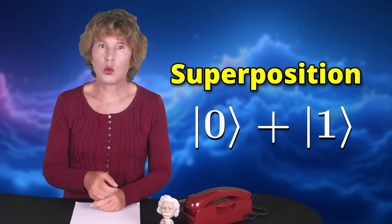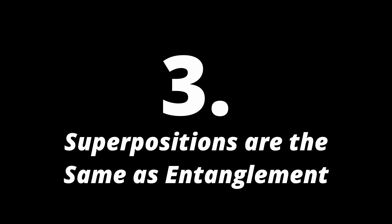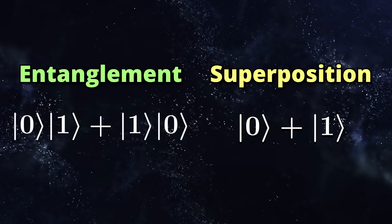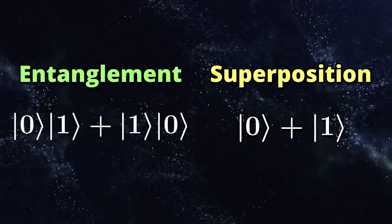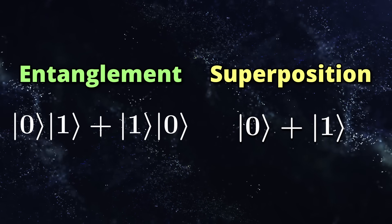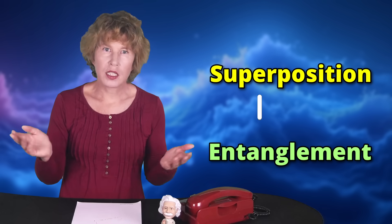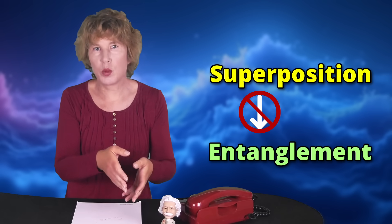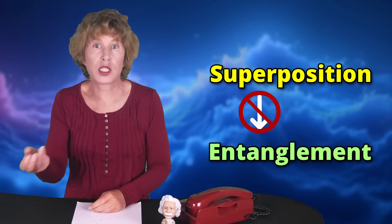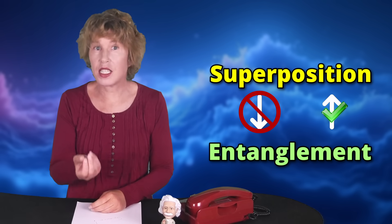This leads me directly to what's the most technical point on my list. Number 3: Superpositions are the same as entanglement. An entangled state is one in which at least two systems share some property, so the two systems are correlated. An entangled state is always a superposition, but not every superposition is also an entangled state. While it doesn't make sense to say 'this state is a superposition' — because every state is a superposition of something — it does make sense to say 'this state is entangled.' The short summary is: if you want to sound smart, talk about entangled states, not superpositions. If you want to sound really smart, ask about the Schmidt decomposition and then excuse yourself to the bathroom.